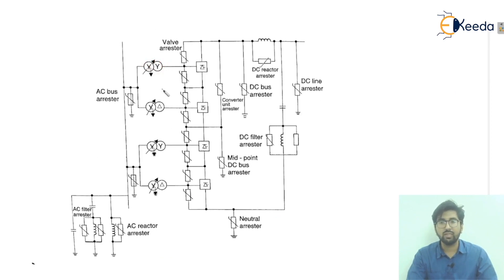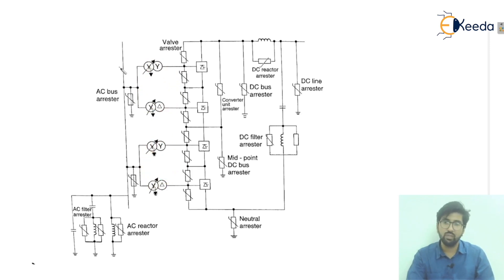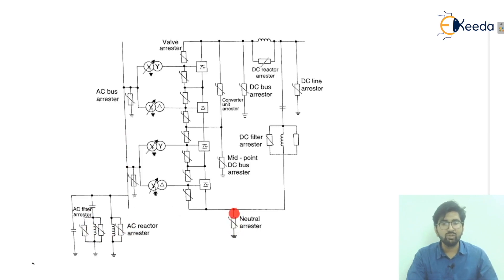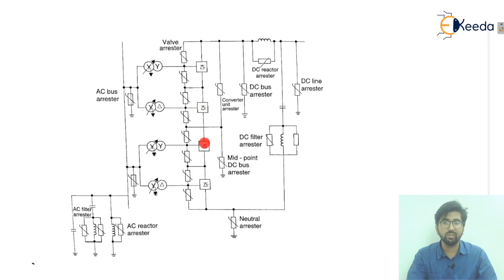Looking at the basic diagram, we have star-star and star-delta transformer configurations. This is called the six-thyristor or six-pulse bridge — the upper six-pulse bridge and the lower six-pulse bridge. These are the AC bus arrestors and the AC filter arrestors, along with the AC reactor. The neutral arrestors are shown here, and the thyristor bridges form the converter unit with a converter unit arrestor.